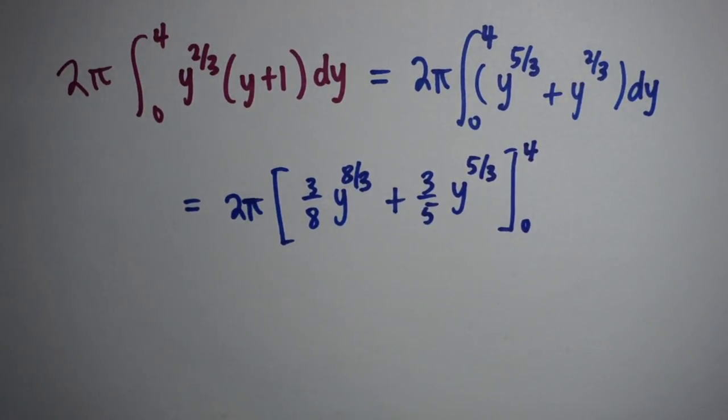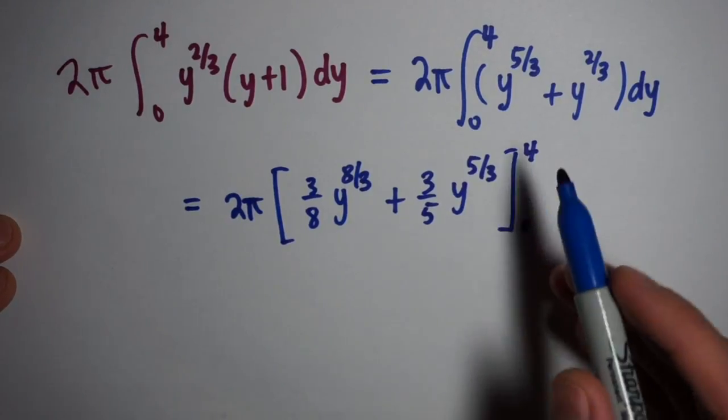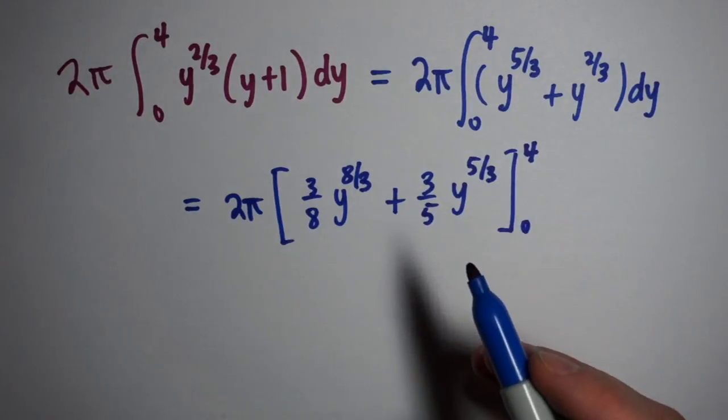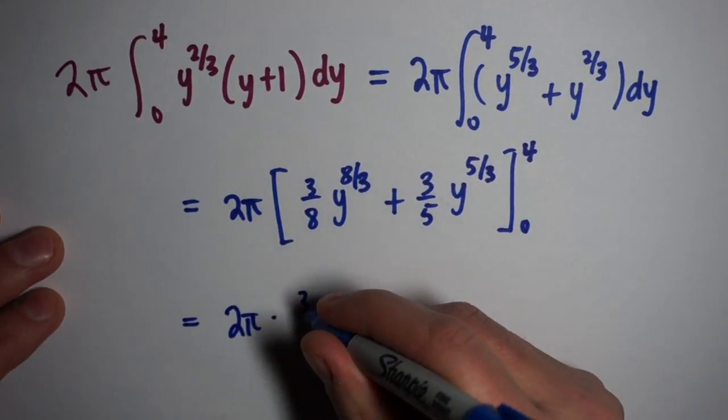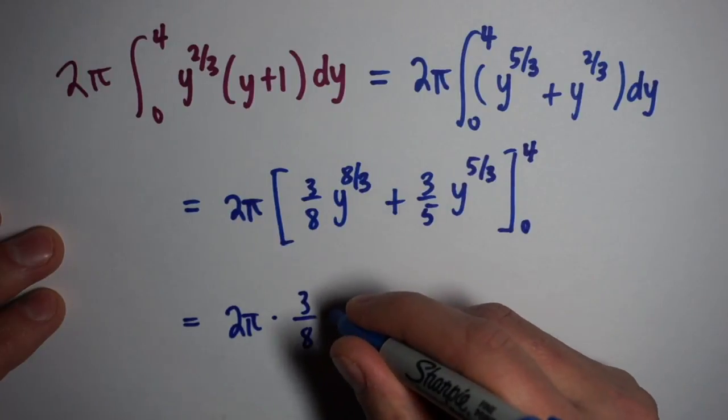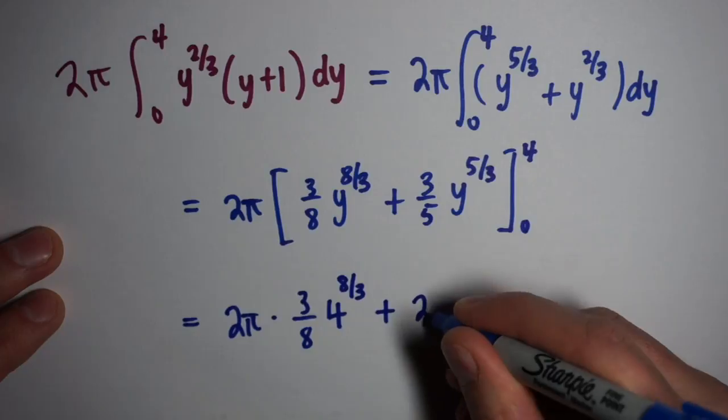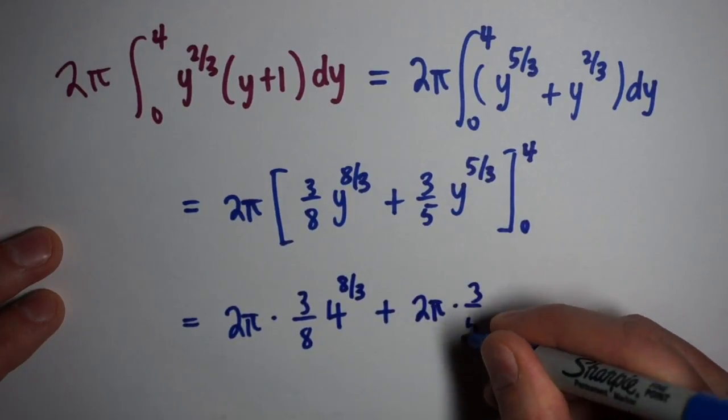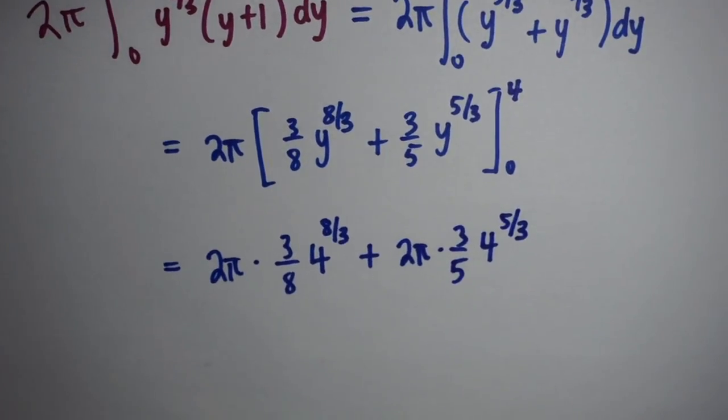When you plug in 0, you get 0 for both parts. So to evaluate this, I'm just going to plug in 4. I get 2π · 3/8 · 4^(8/3) + 2π · 3/5 · 4^(5/3). This will be the exact answer.